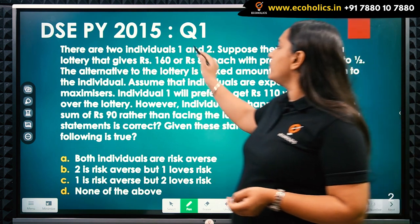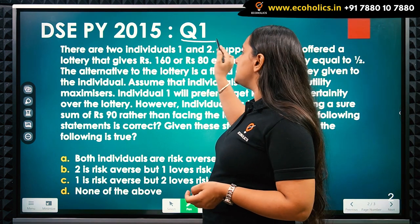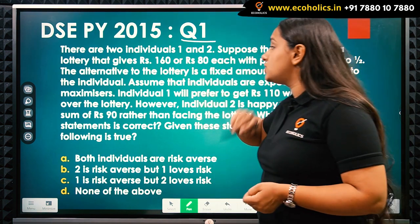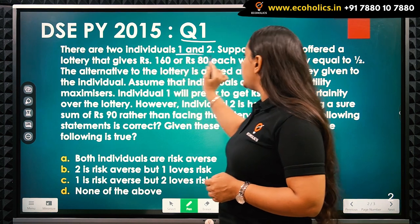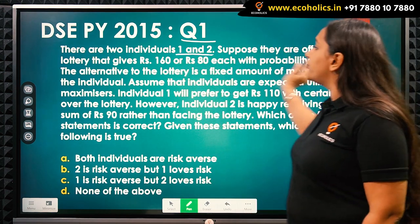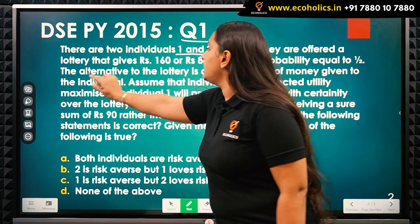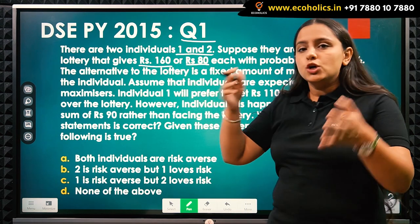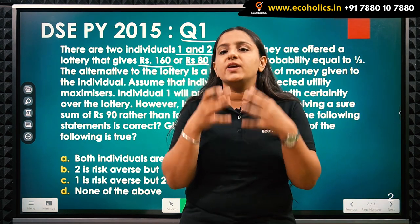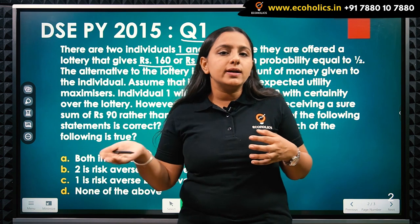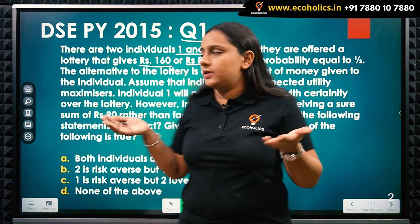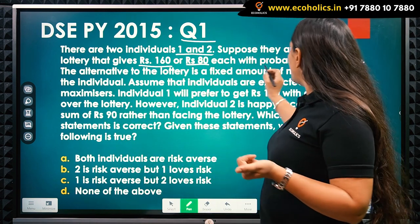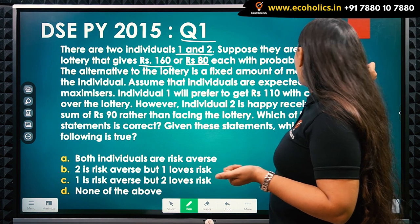It's question number one from previous year 2015, which reads that there are two individuals, one and two. Suppose they are offered a lottery that gives rupees 160 or rupees 80. If they get the lottery, either they are going to get 160 rupees or otherwise they are going to get 80 rupees, each with probability equal to half.